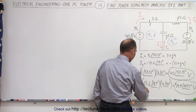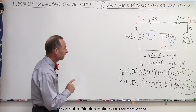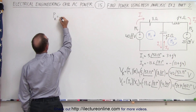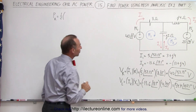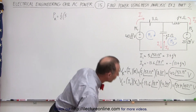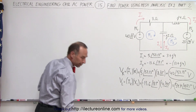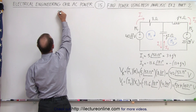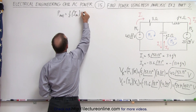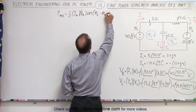So now we have the voltage across the resistor and the voltage across the inductor, and we're ready to calculate the power in each of the components. The average power equation is equal to one half times I max, times V max, times the cosine of the difference of the phase angles for the current and the voltage.